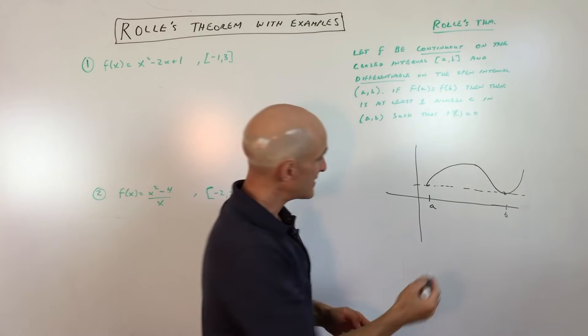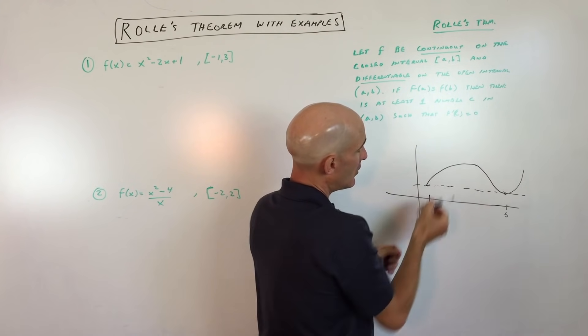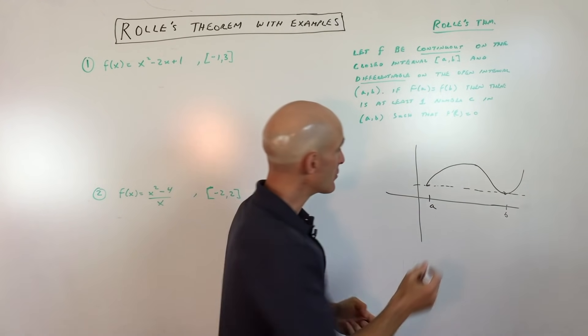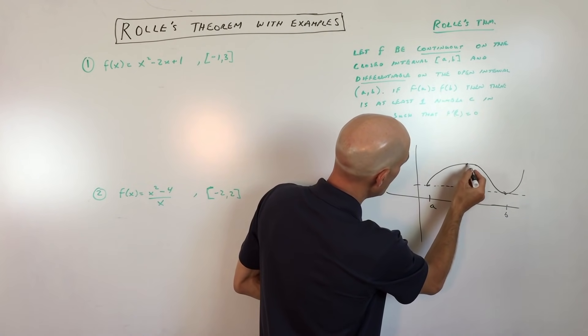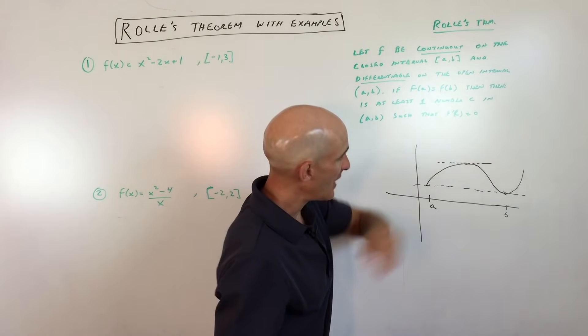And so what that means is that somewhere in between a and b, the derivative, meaning the slope of the tangent line has to be zero. And you can see that would occur somewhere right about here, there would be your tangent line right like so, and it's going to have a slope of zero.